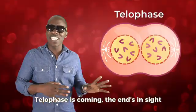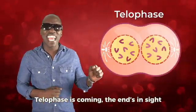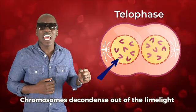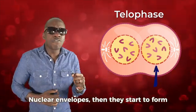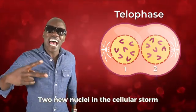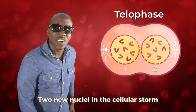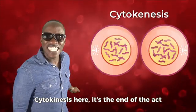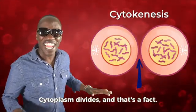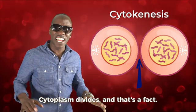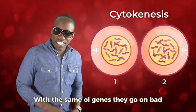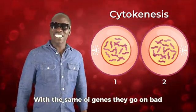In telophase, chromosomes decondense out of the limelight, nuclear envelopes start to form — two new nuclei in the cellular storm. Cytokinesis at the end: cytoplasm divides, and that's a fact. Now we got two cells from the one we had, with the same old genes going on bad.